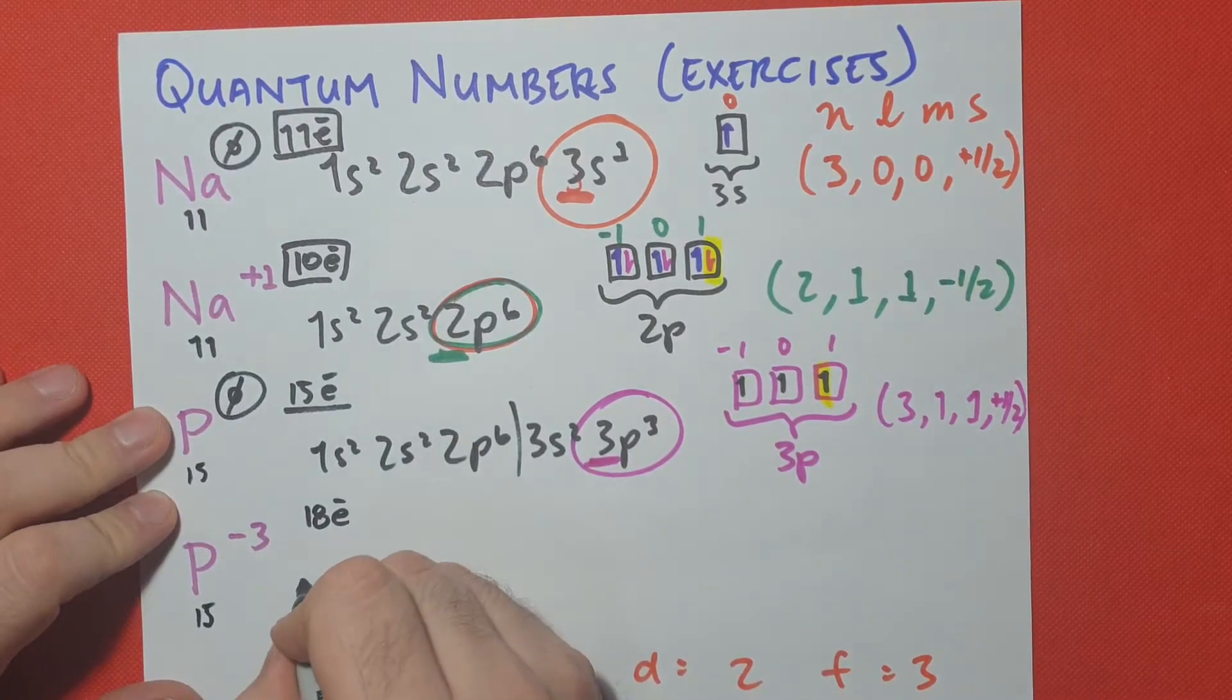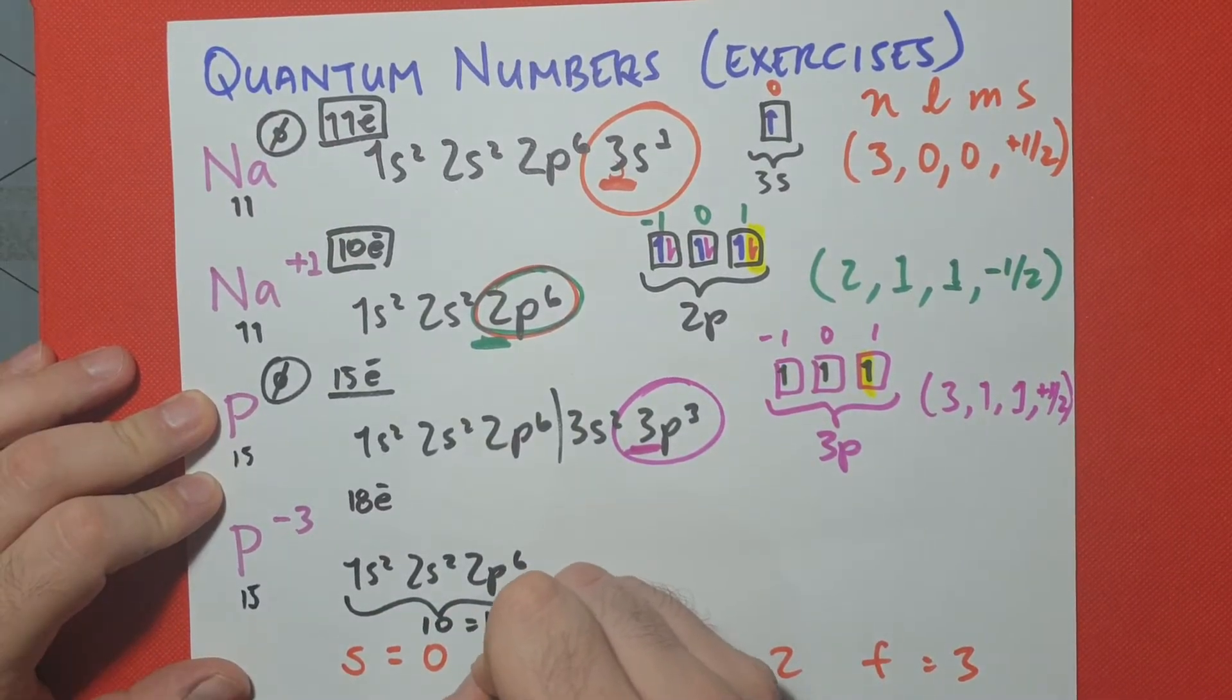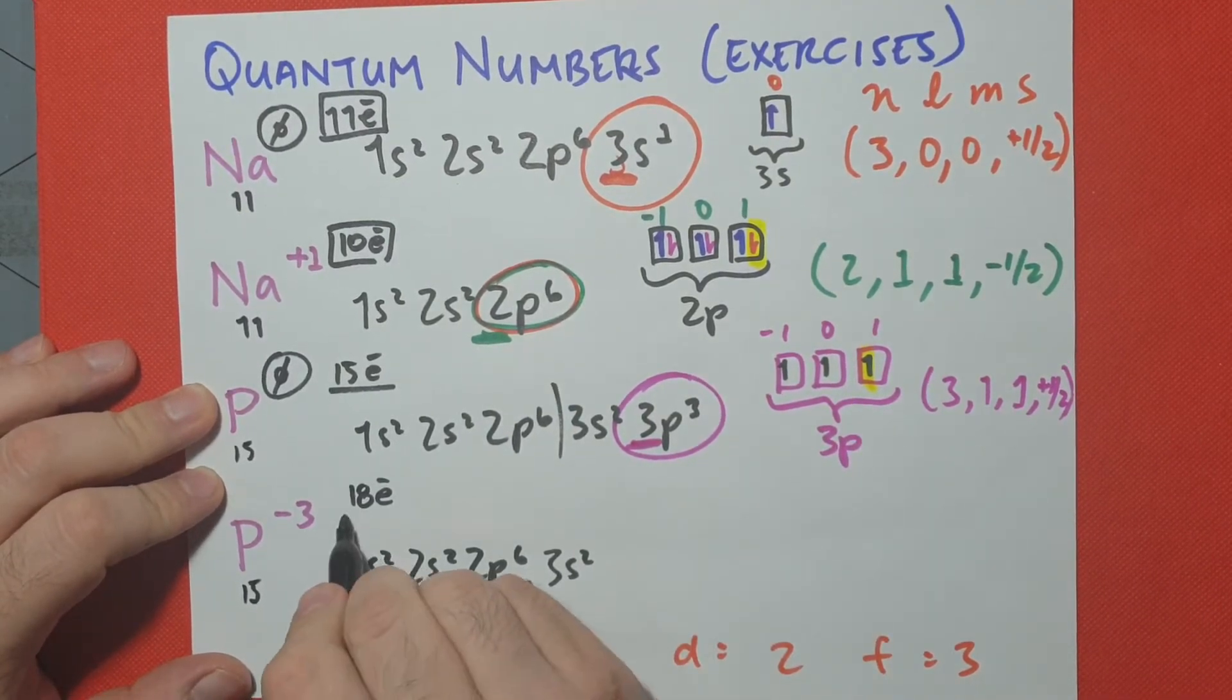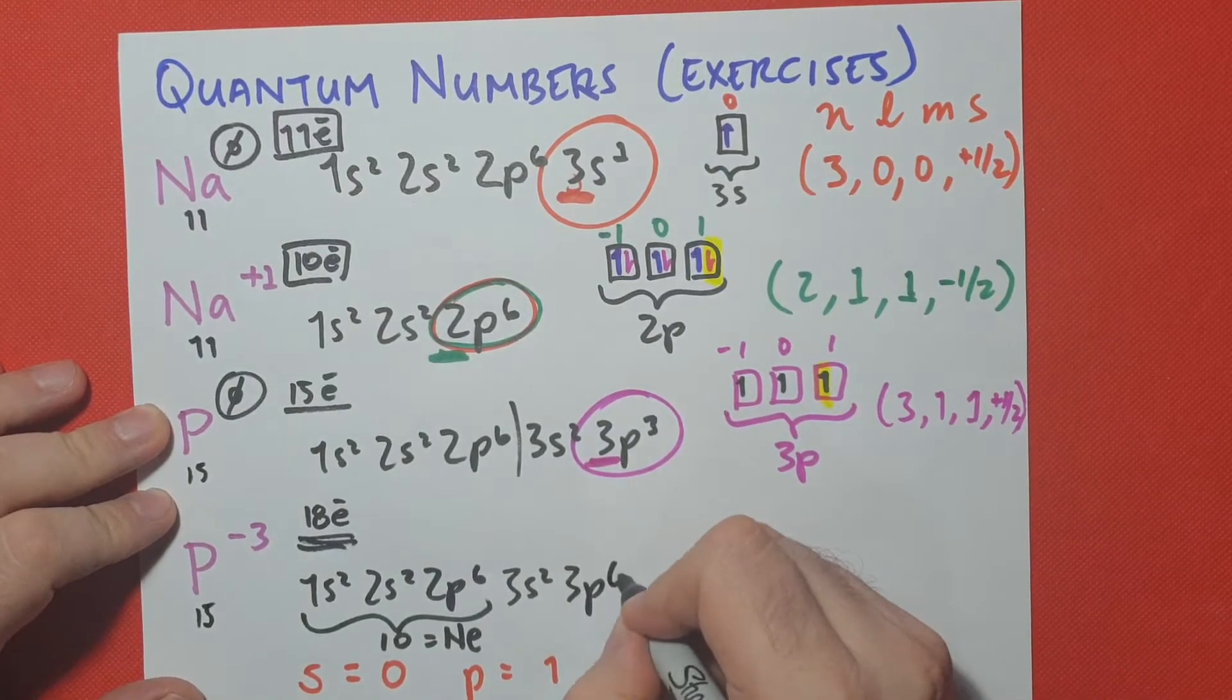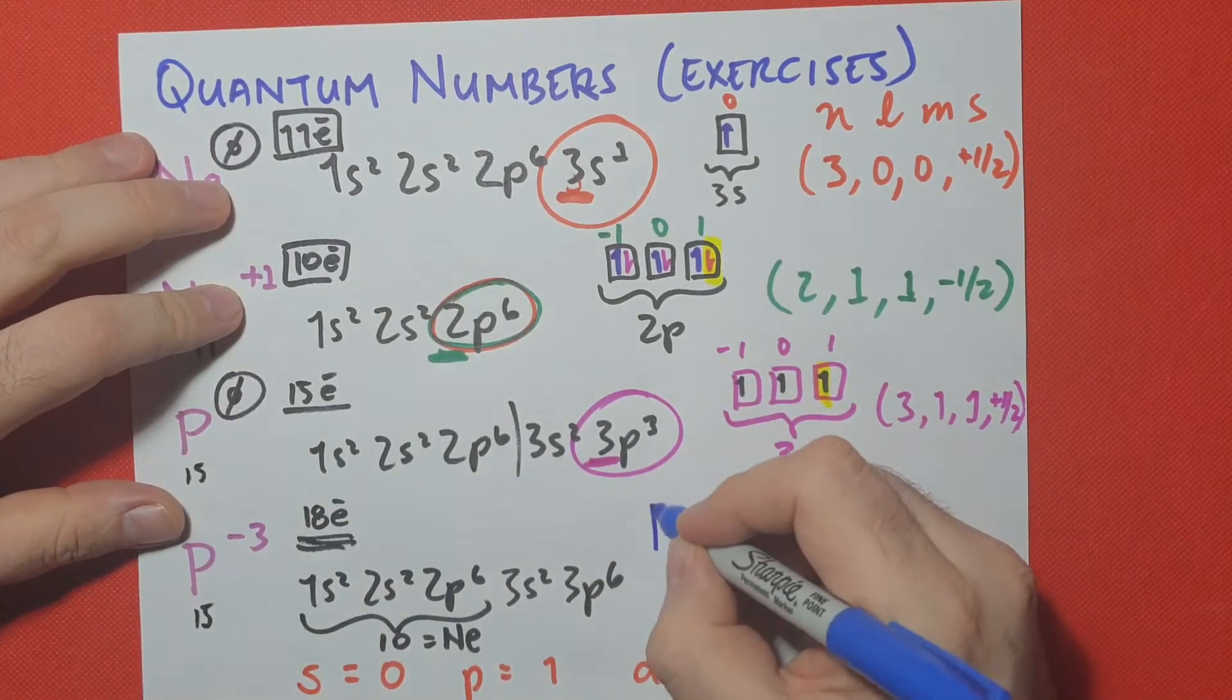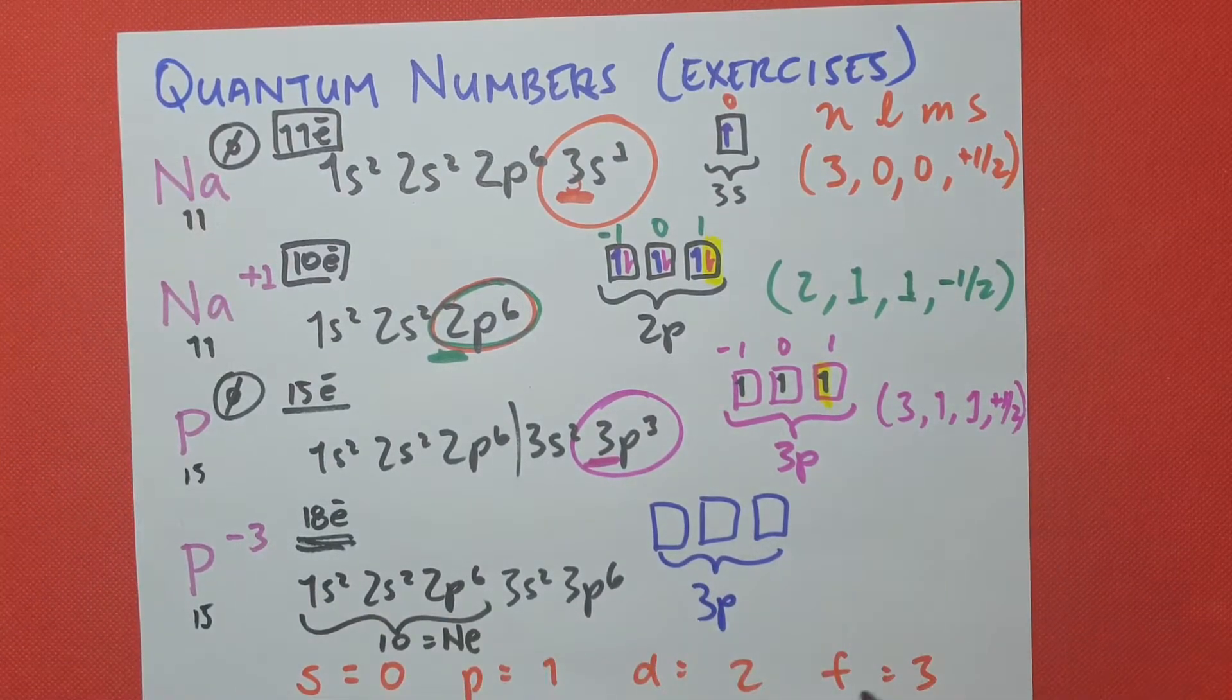So its configuration is 1s2, 2s2, 2p6, and remember that this is 10. It's the same as neon. And then 3s2, 12, and we're missing 6, because we want 18. So 3p6. So very similar to the exercise that we just did. We draw our 3 boxes. We're still in 3p, we're talking about a different atom, however.